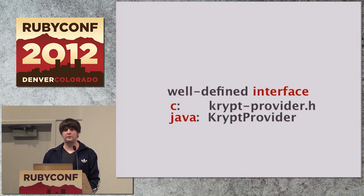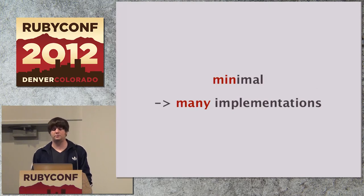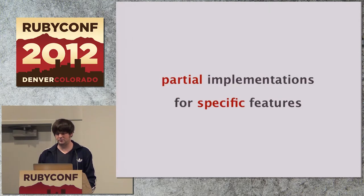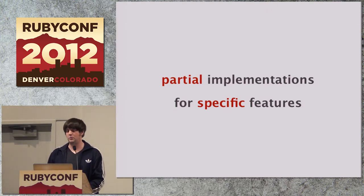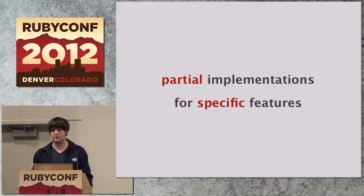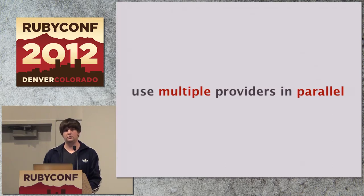What happens is that provider defines an interface — in C this would be a header file, in Java we have an interface that needs to be implemented by each provider. I want to keep those minimal so that people would be encouraged to provide their own providers. It's also possible to do just a partial implementation — if you have one very specific feature available in one particular library, you could write a partial implementation and still use this alongside the default provider.